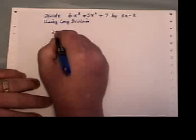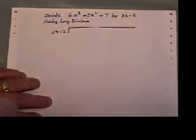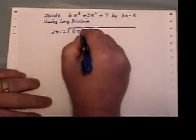So the first step, put down your 3x minus 2 and your long division sign, and start to write down what you are dividing it into.